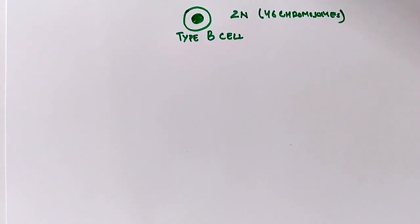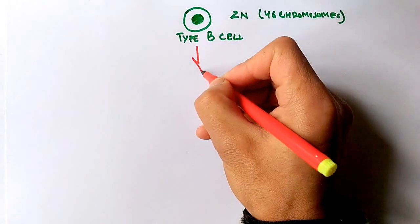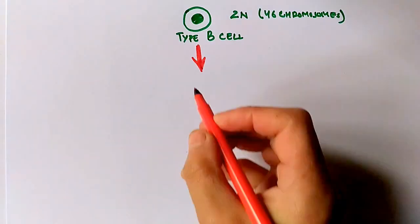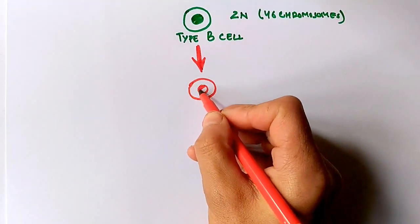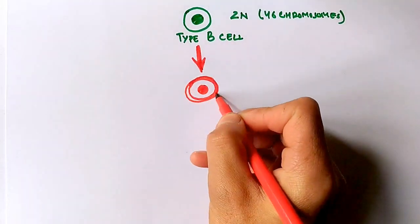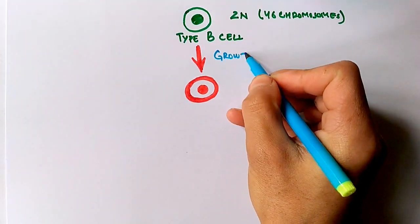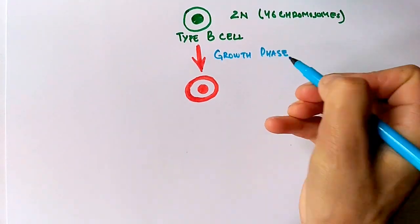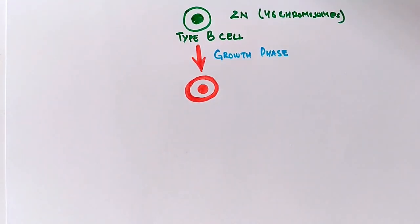The Type B cell has the capability to grow into a primary spermatocyte. This Type B cell, which has 2n chromosomes — that is, 46 chromosomes in humans — grows into the primary spermatocyte, which receives nourishment from Sertoli cells.